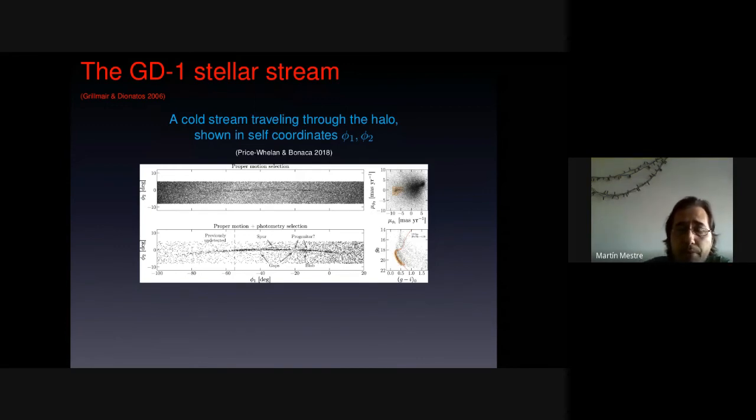In this case, Price, Bonaca, and others have made a picture of the stream by first cutting in proper motion spaces and then applying a filter in color magnitude diagram. They have obtained a very clean picture of the stream where you can see two condensations of stars off track the stream, which are the spur and the blob, two gaps, at least two gaps, and here the putative progenitor because we don't know still where is the progenitor of GD1.